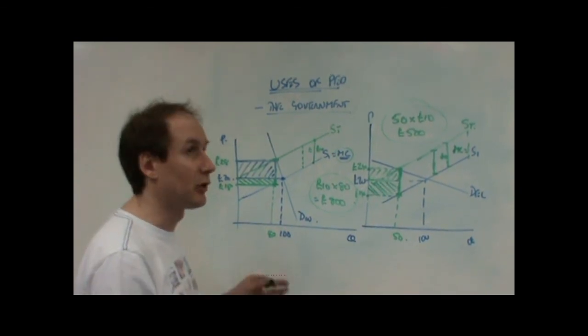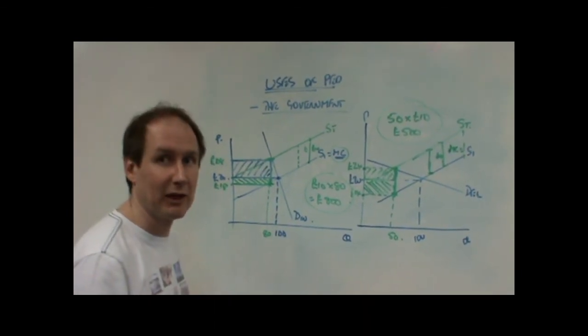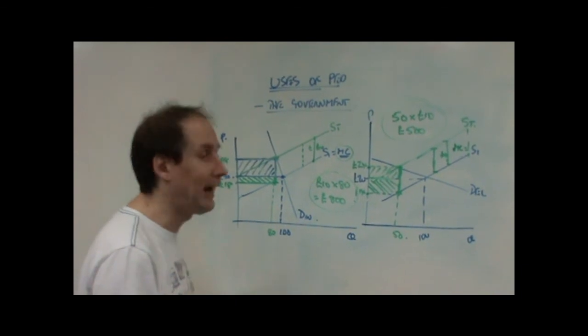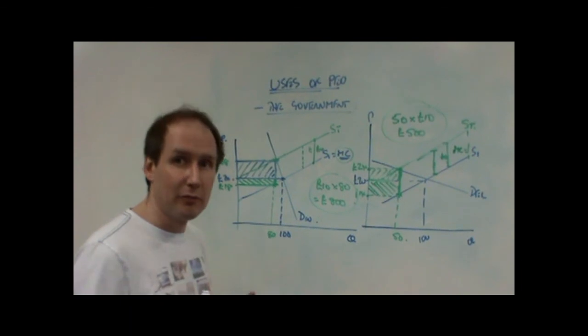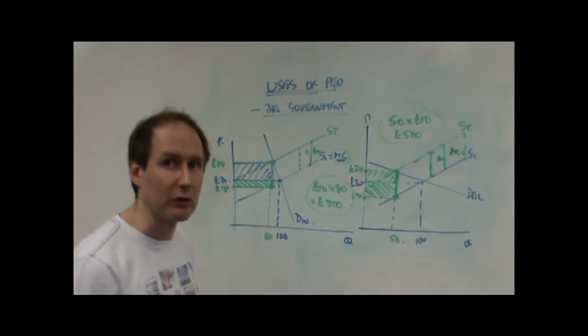So clearly, if the government taxes products which are price inelastic in demand, then the government gets a far higher tax revenue. The other impact is the consumer pays more of the tax than the producer.